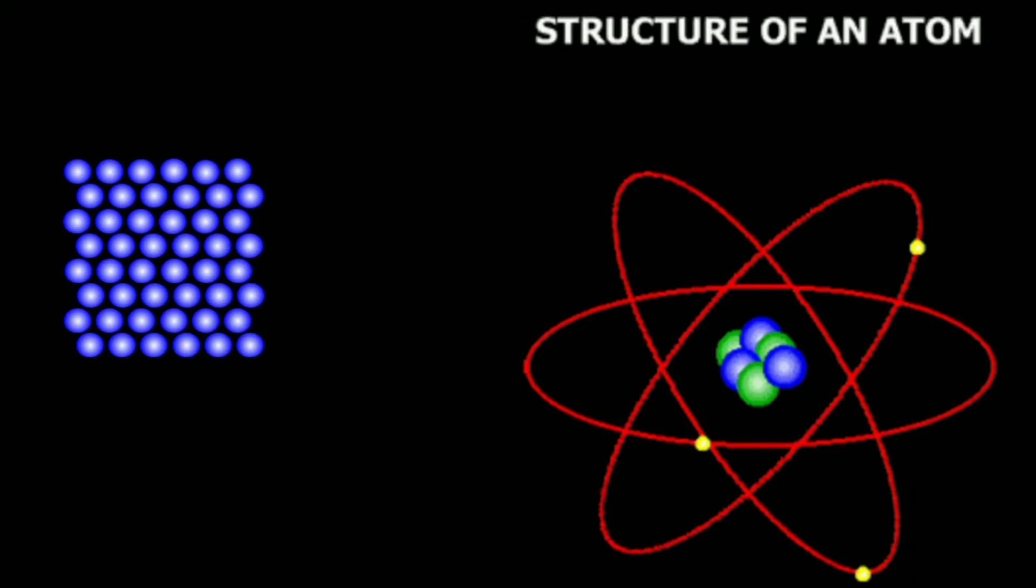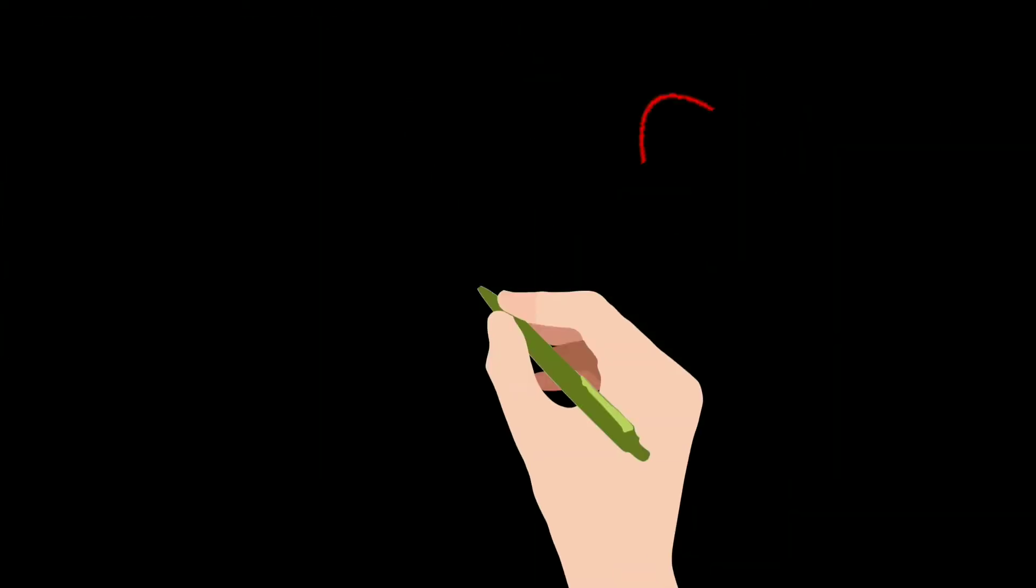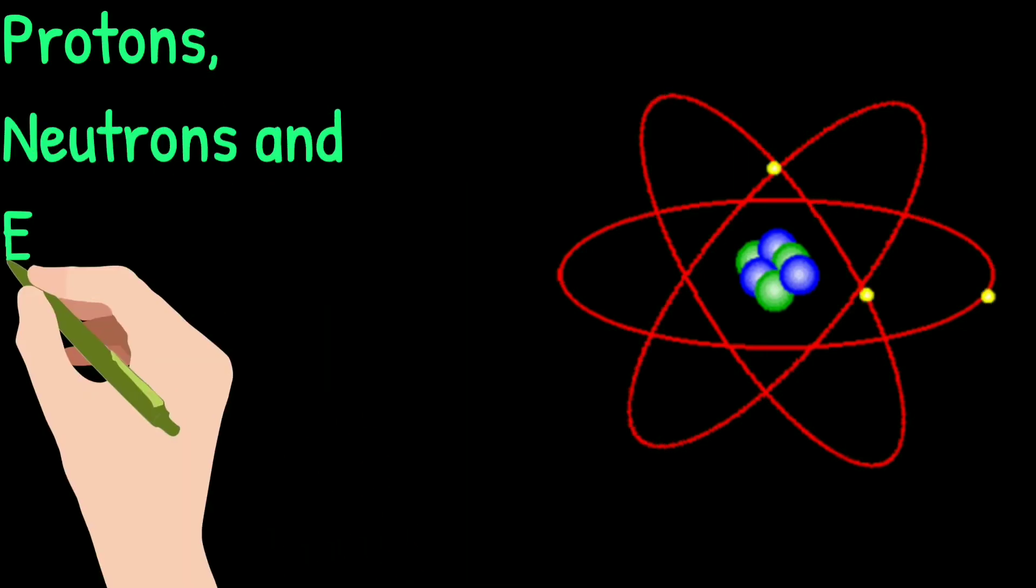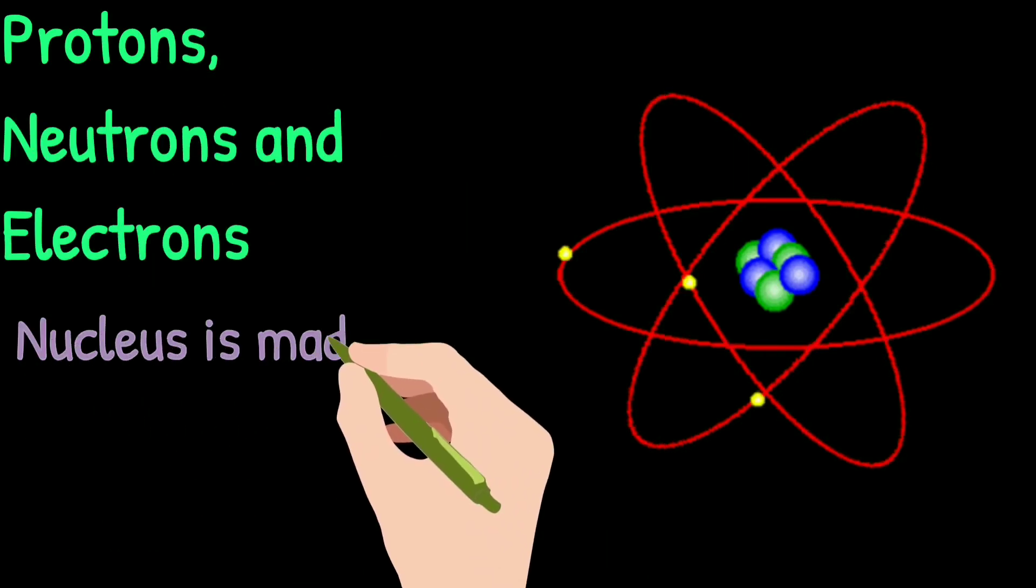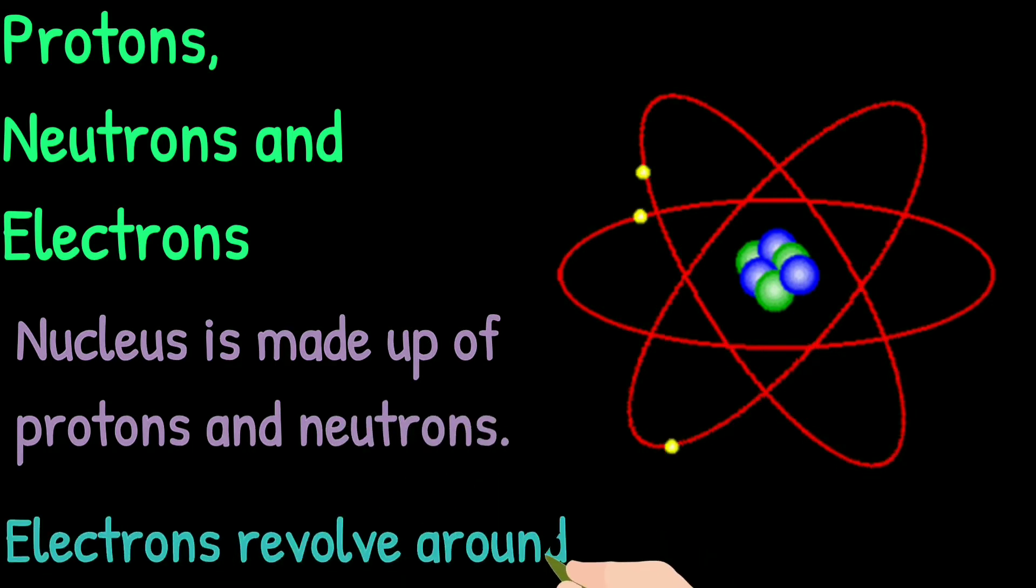We take one atom of this and try to analyze its structure. Then we will find something like this: Atom is made up of three subparticles - these are protons, neutrons, and electrons. Nucleus is made up of protons and neutrons. Electrons revolve around the nucleus in orbits.